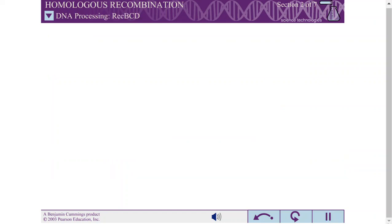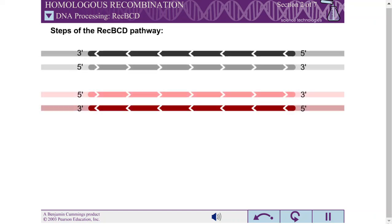The mechanism of recombination in E. coli is called the REC-BCD pathway. This mechanism closely follows the double-strand break repair model of homologous recombination. Therefore, the REC-BCD pathway serves as a good model for recombination in both prokaryotes and eukaryotes, although the specific proteins involved differ from organism to organism.